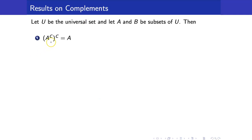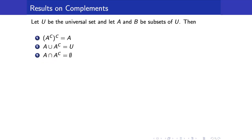First, we have that the complement of the complement of a set is equal to itself. Next, we have that the union of A with its complement is the universal set. The intersection of A and its complement is the null set. The complement of the universal set is the null set, and the complement of the null set is the universal set.